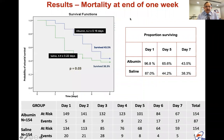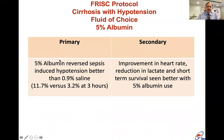At one week, mortality in the albumin versus saline group was significantly different — survival was 6.2 days in the albumin group versus 4.9 days in the saline group in patients with hypotension. We concluded that 5 percent albumin solution reverses sepsis-induced hypotension better than 0.9 percent saline. Albumin also improved heart rate, reduced lactate, and showed better short-term survival up to seven days compared to saline.